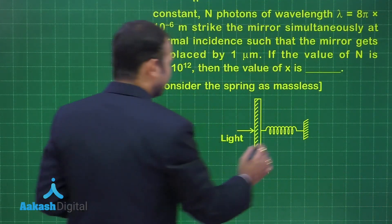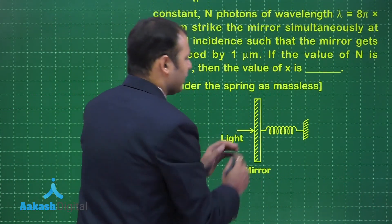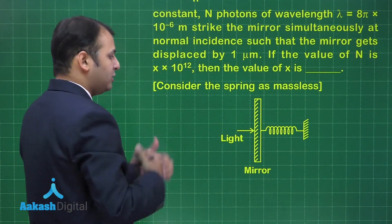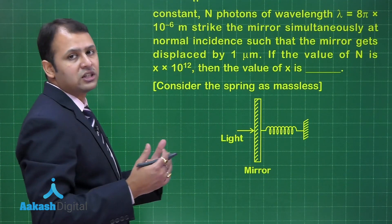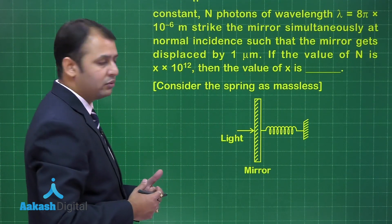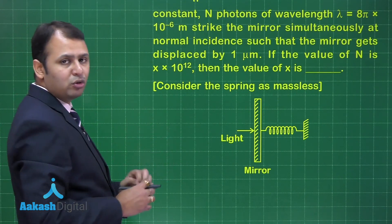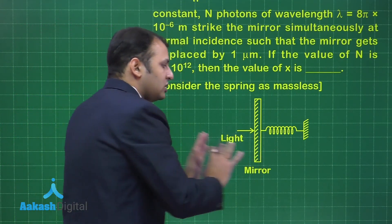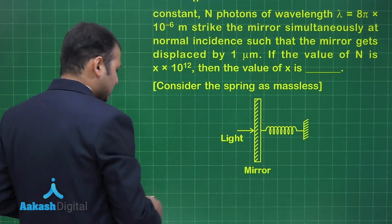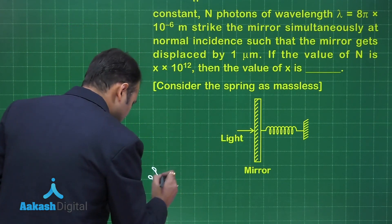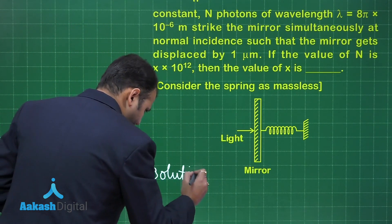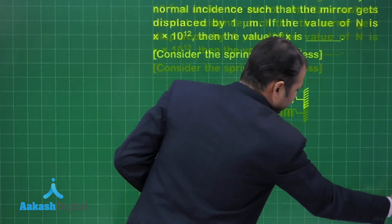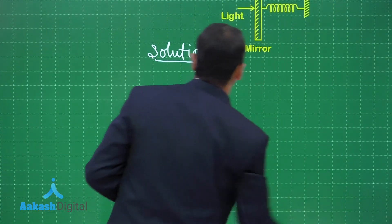Looking at the diagram, light particles hit the mirror and bounce back. Since it is a perfectly elastic collision, there is a change of momentum equal to 2h over lambda per photon. Since there are n particles, the total change in momentum is 2nh over lambda. This impulse causes the mirror to be displaced.